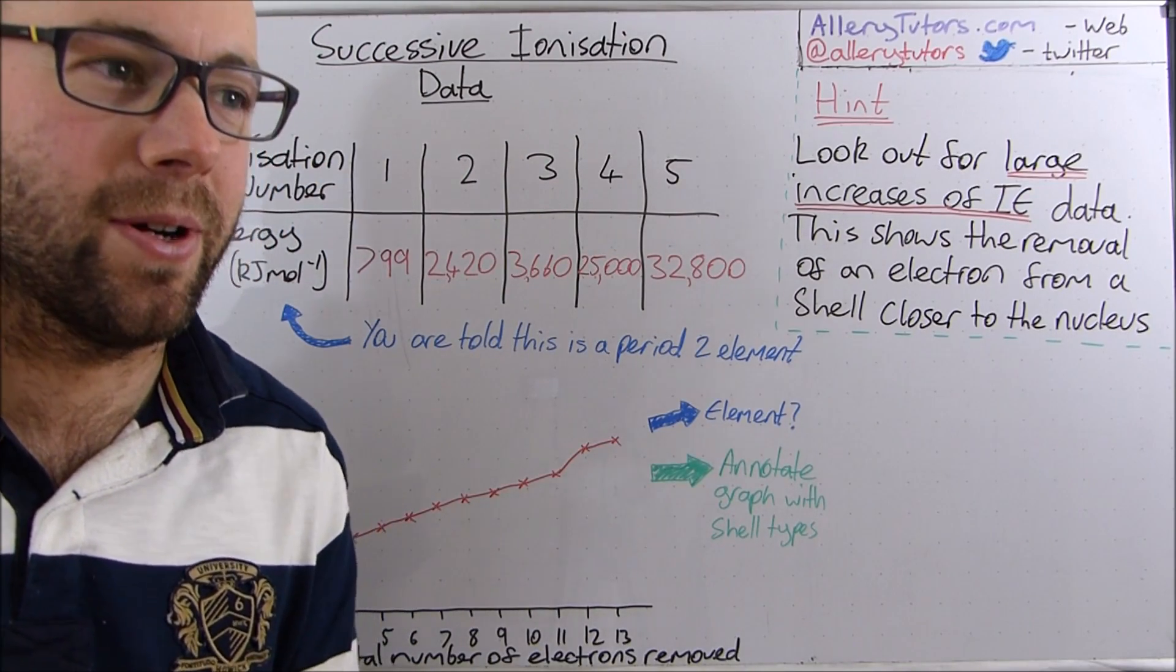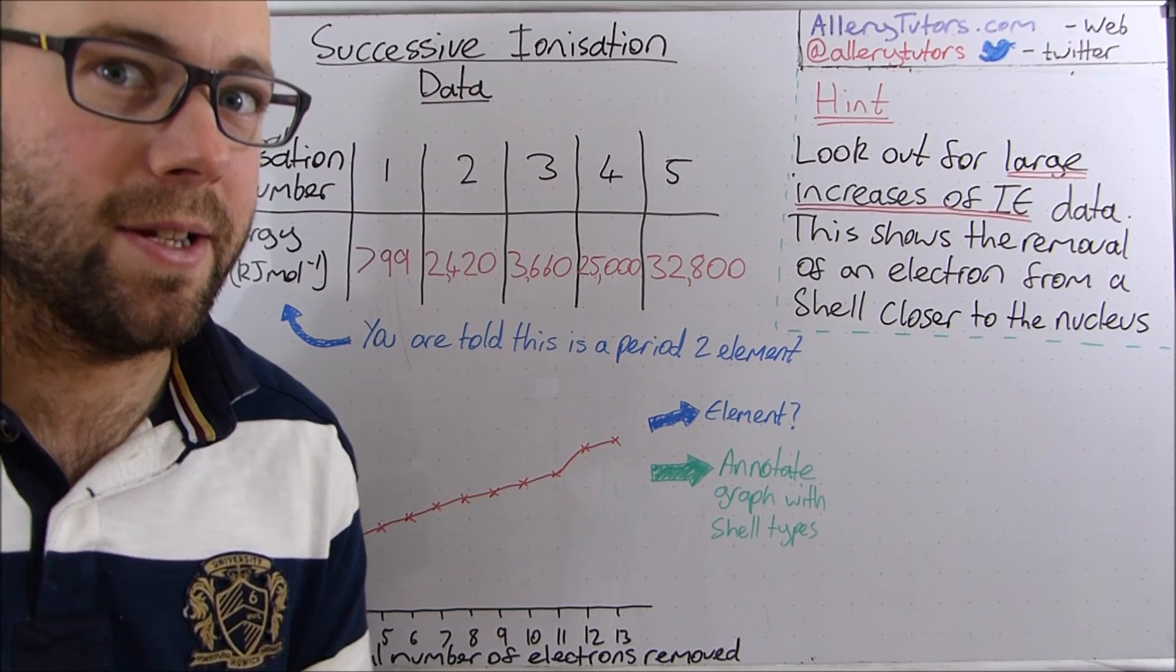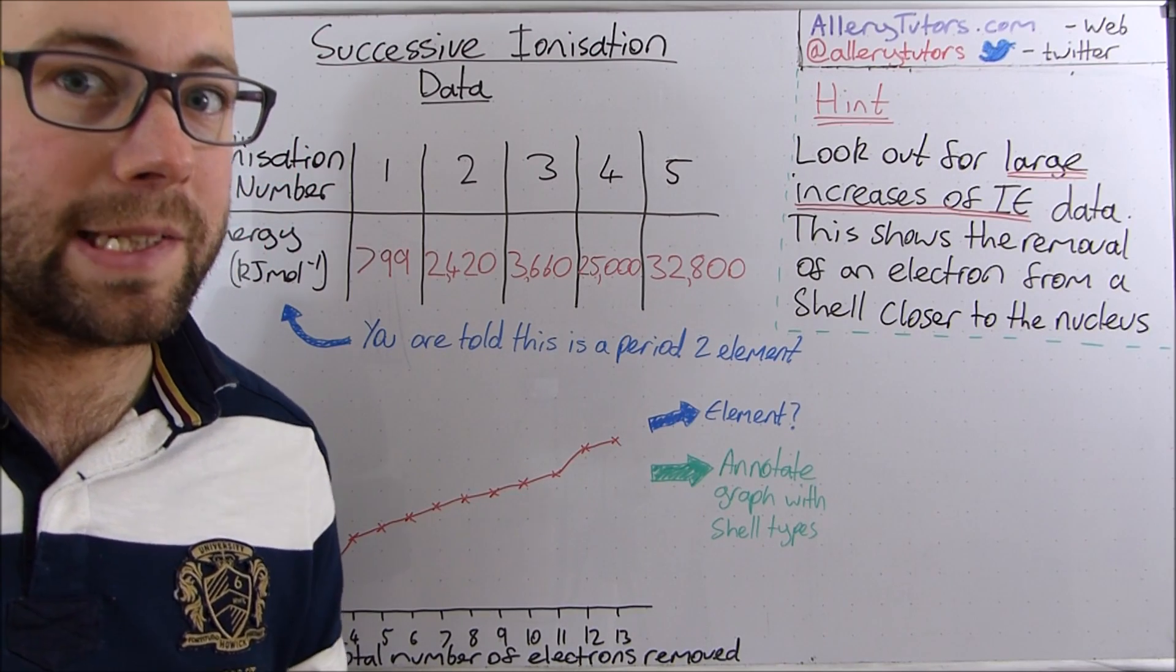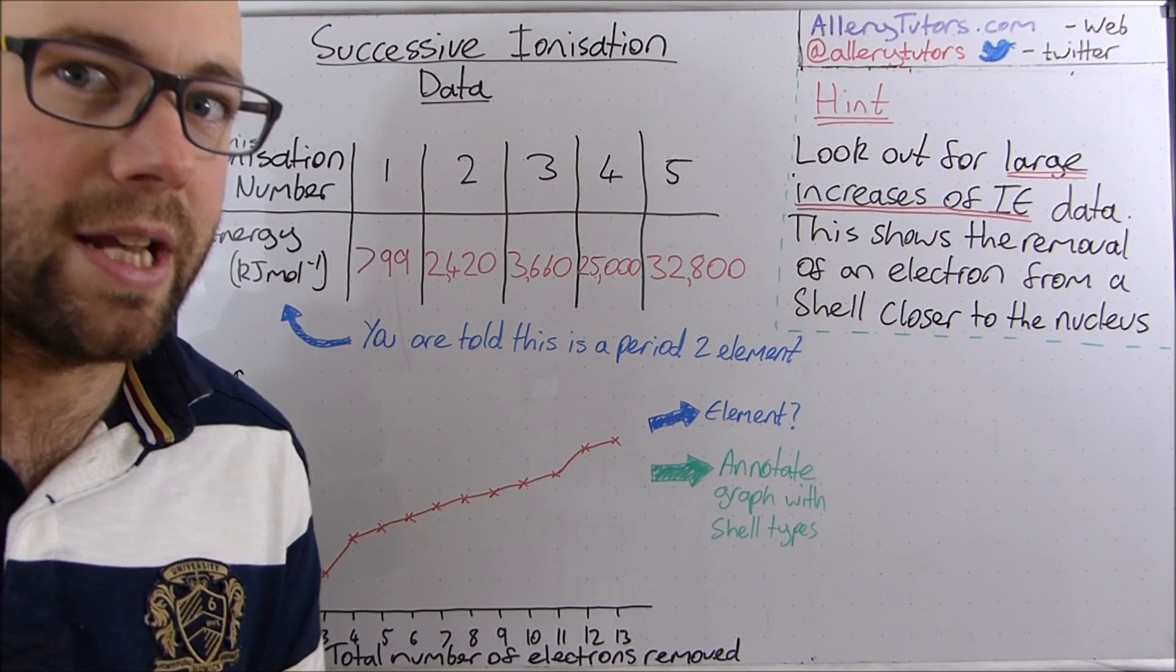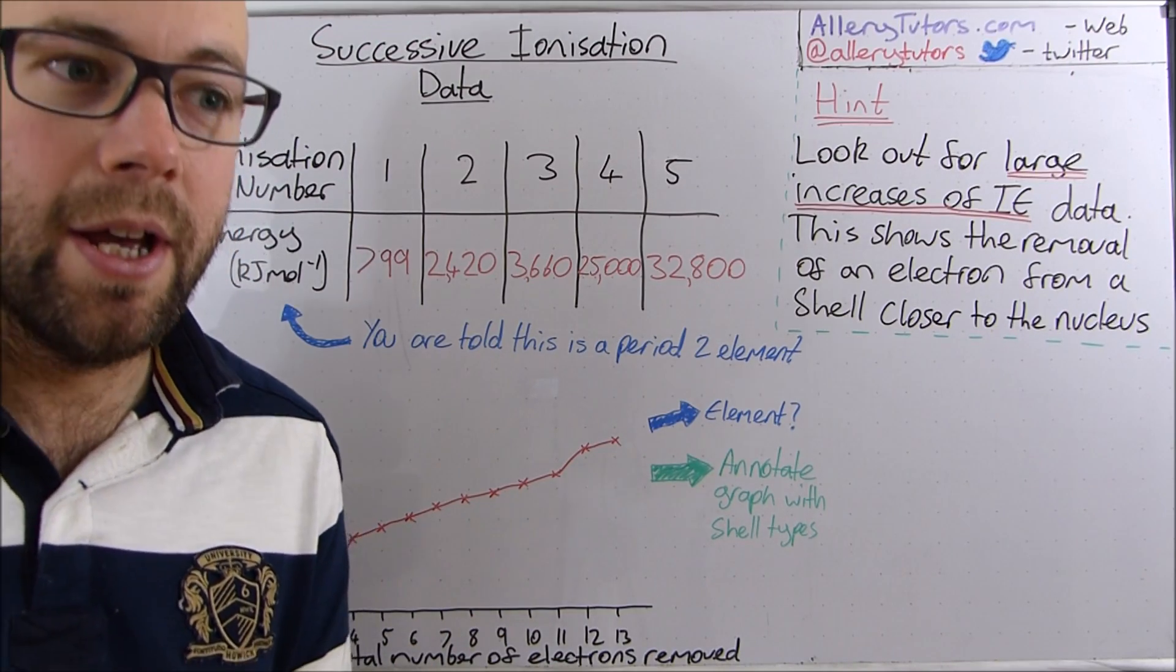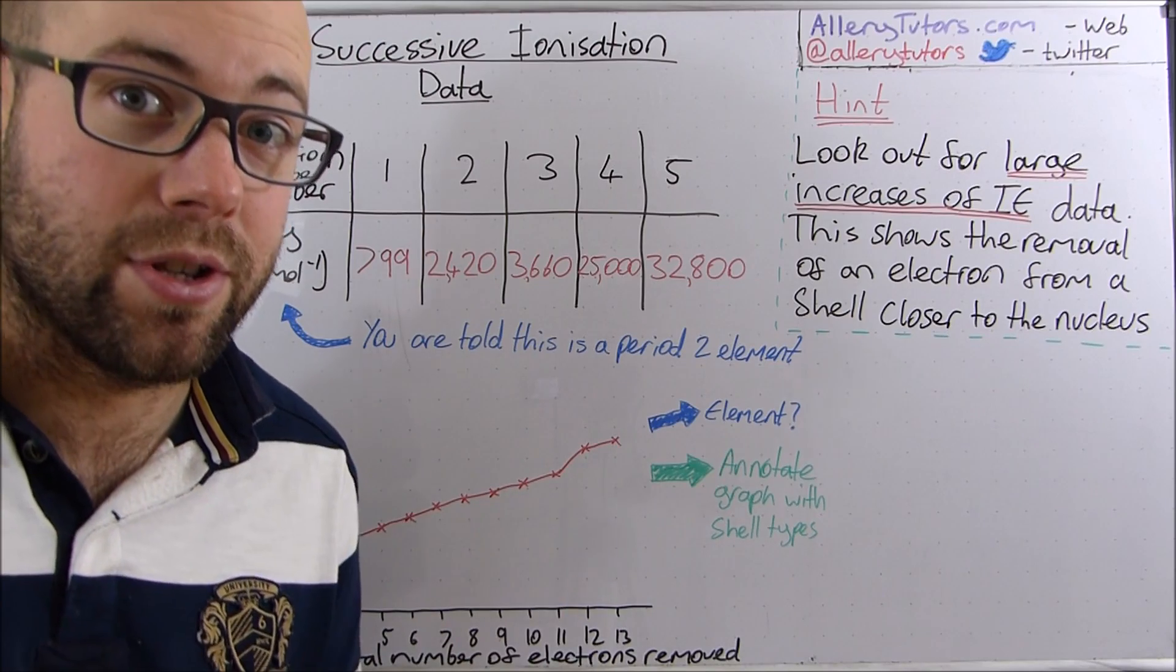In this video we're going to look at an example of periodicity, except what we're going to do is remove successive electrons from the same atom. So for example if we take an atom and we just keep taking electrons from it, every time we take an electron we're going to measure the energy.